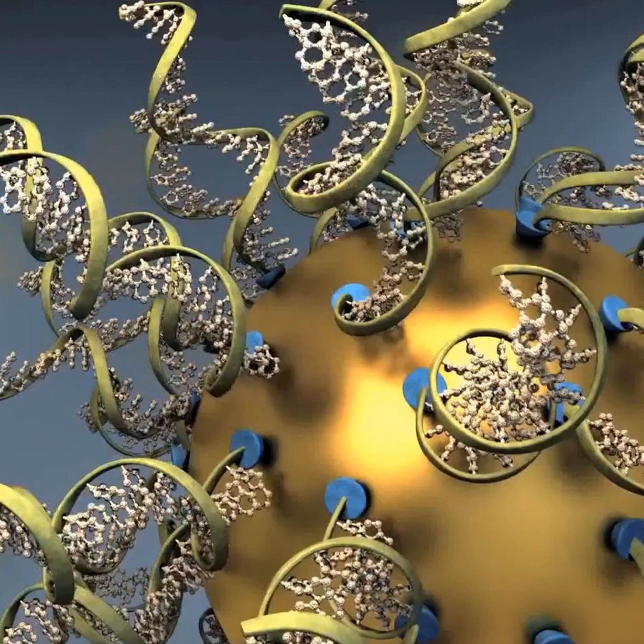In the past decade, no new drugs have been approved for the fatal brain cancer glioblastoma. But a team of Northwestern scientists are eager to change that with a new drug designed at Northwestern. An early clinical trial found that the drug, called NU0129, kills tumor cells in people with glioblastoma.